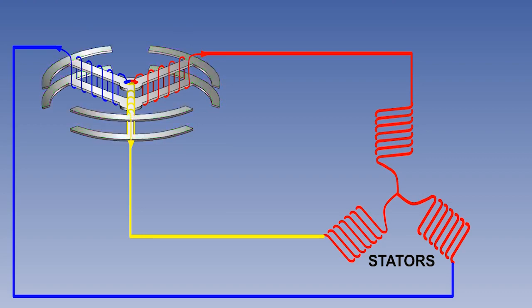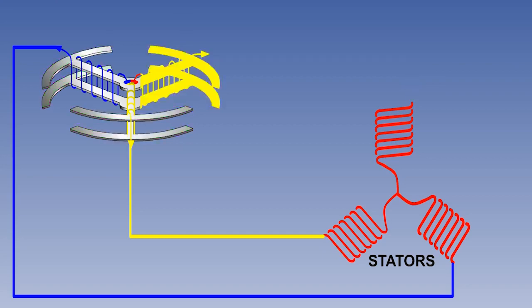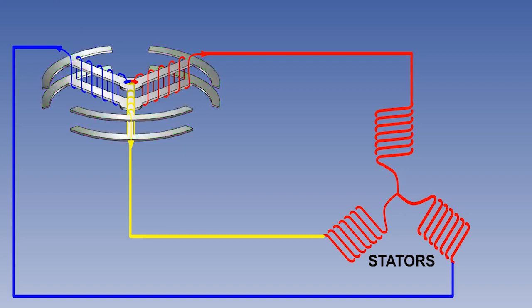These coils are called stators. Each spoke of the flux valve senses a different voltage, because they are spaced 120 degrees apart, and therefore make a different angle to the Earth's magnetic field.